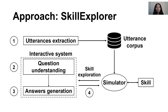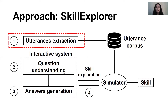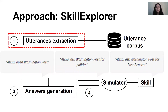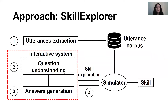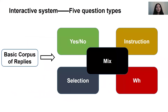Here is the framework. First, we get the first input to a target skill. Developers provide utterance samples in their skill introduction pages to teach users how to use their skills. Some developers also give instructions and descriptions. We collect them as our utterance corpus. After the first utterance is sent to a skill, it will return an output. We refer to the output as questions. Skill Explorer should understand these questions and generate answers for continuing the conversation.